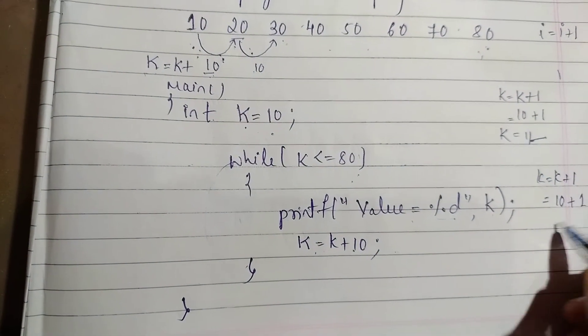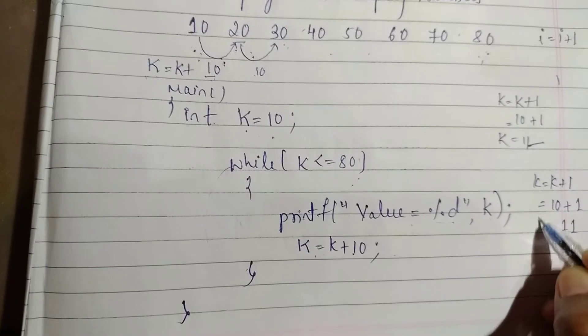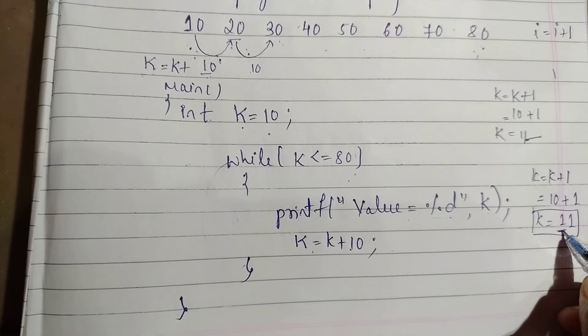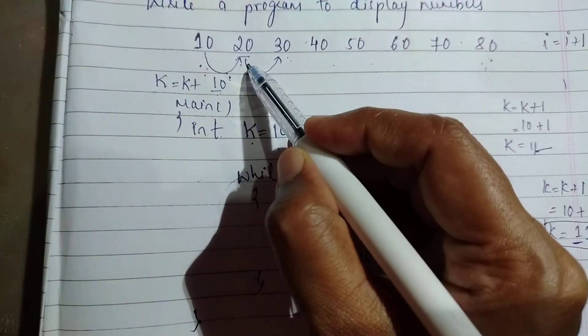write K = K + 1, then 10 + 1 is 11, the next value for K will be 11. But we don't want this; we want the value as 20.